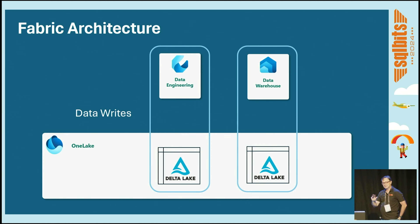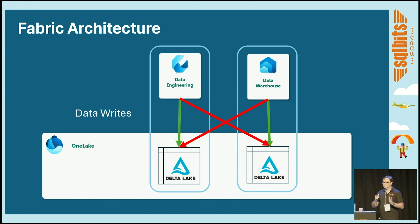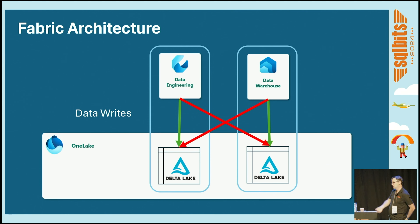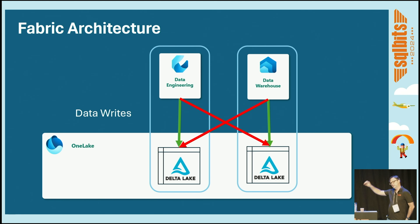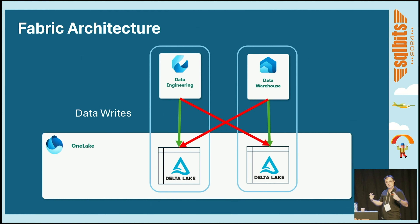Workloads can write into their own Delta Lakes, but we can't write from one object type to the other. The reason is each engine has abilities the other doesn't. For example, the data warehouse supports multi-table transactions — ACID properties needed for financial systems, ensuring invoice headers and row items are inserted in a transactionally safe way. The lake can't provide that, which is why cross-engine writes aren't supported.